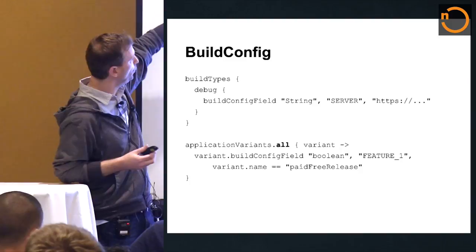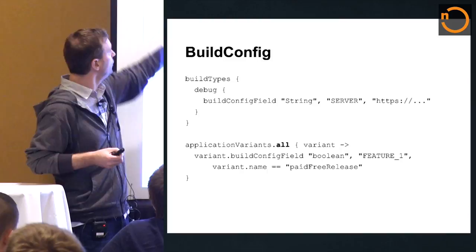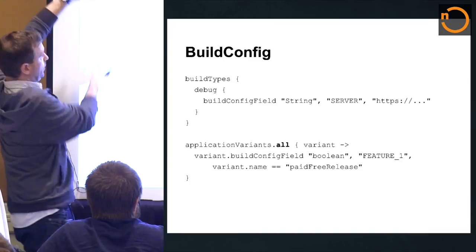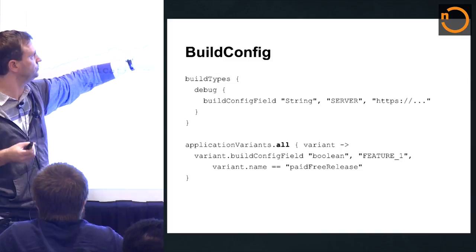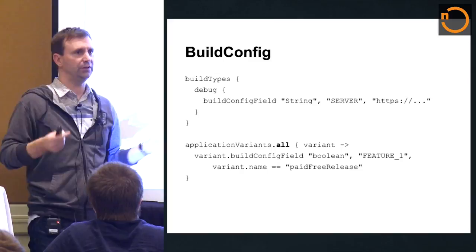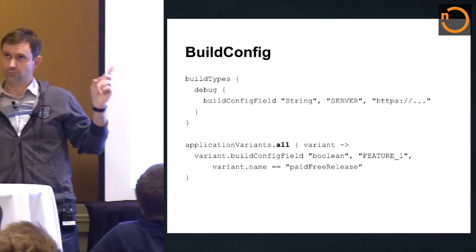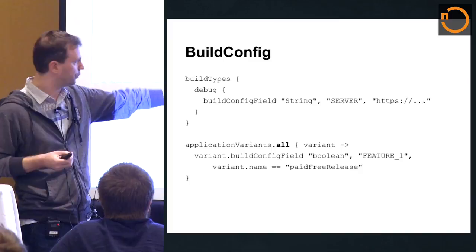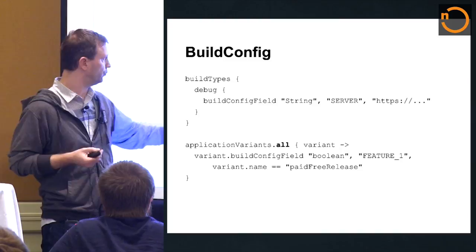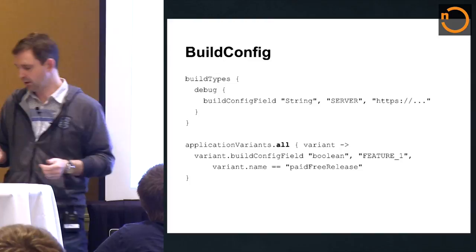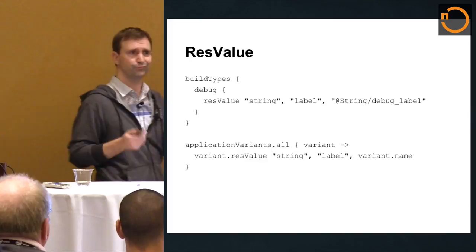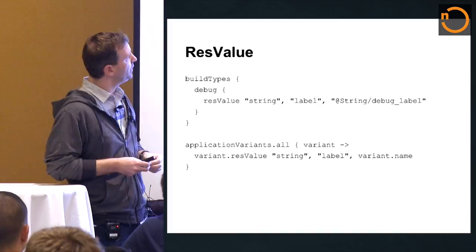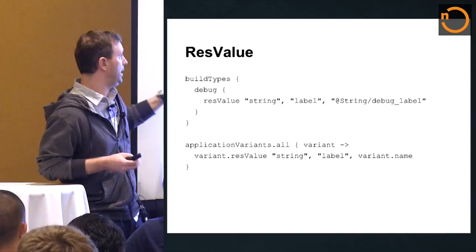You can also create your own BuildConfig fields in the DSL. For example, if you want to access a different server between debug and release, you do: buildConfigField 'String', 'SERVER', '"yourserver.com"' in debug, and similarly in release with a different value. Then in your code you just access BuildConfig.SERVER and it's always the right one. We just added, in the version released Monday, the ability to do that per variant as well — on the variant object you can now do buildConfigField and create a boolean, for example called FEATURE_ONE, set to true only if the variant name is 'paidFreeRelease'.